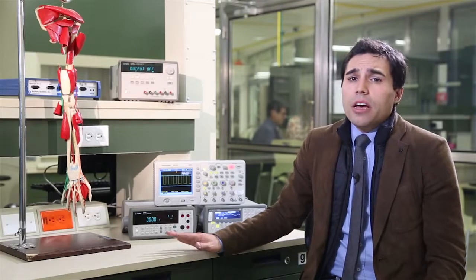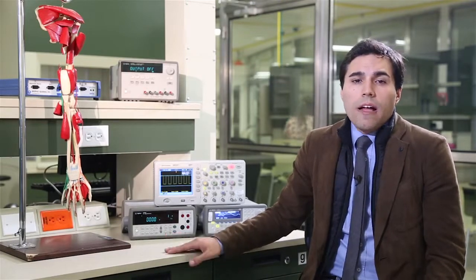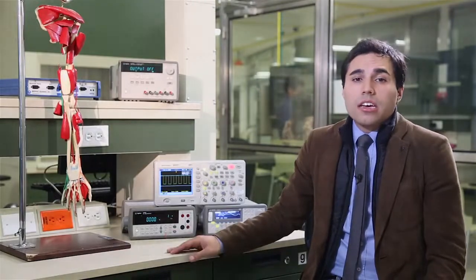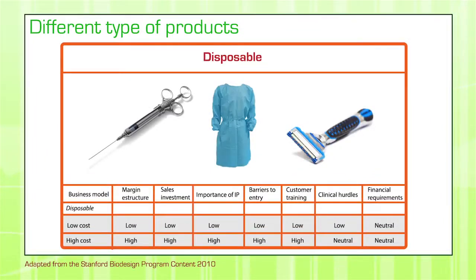The first type of business model in medical devices is probably the most traditional one: the disposable product business model. This includes things like syringes, surgical coats, or even razor blades. Any medical product that you use quickly and then dispose of, for whatever reason. There are two types of disposables overall: the low-cost end and the high-cost end, each with different characteristics in terms of monetizing these products.